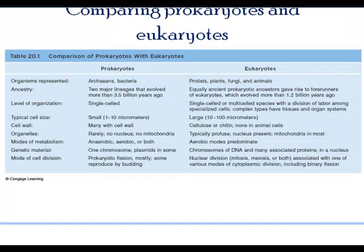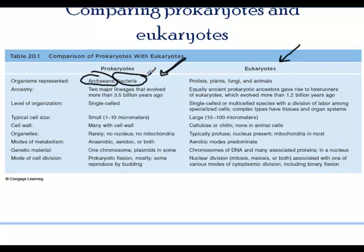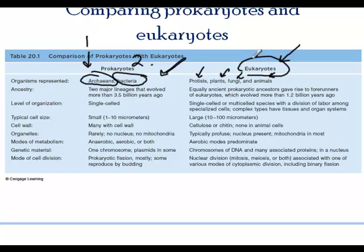Here are the differences between prokaryotes and eukaryotes — it's important that you review them. The prokaryotes are the archaea, which have their own domain, and then we have the bacteria on their own domain. Then we have all the protists, plants, fungi, and animals. This is the latest way of forming domains: the most primitive archaea, then bacteria, then the eukaryotes. Today we are looking at the kingdom protist.